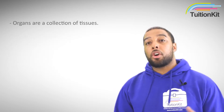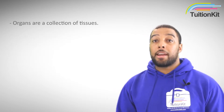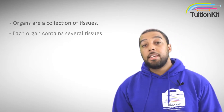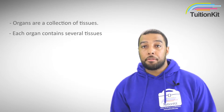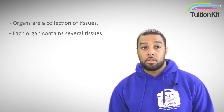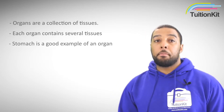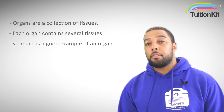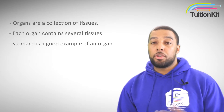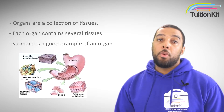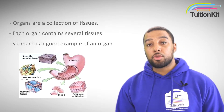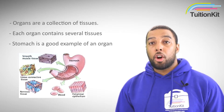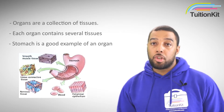Organs are a collection of tissues. Each organ is made of several different tissues, and the stomach is a good example of an organ. In the stomach we have smooth muscular tissue, which helps the stomach to contract and churn the food.